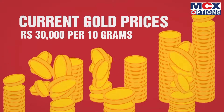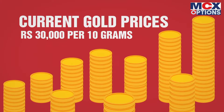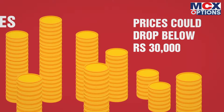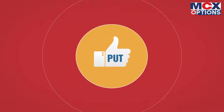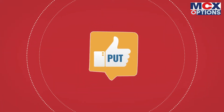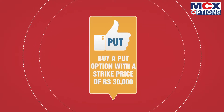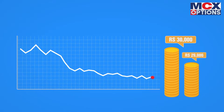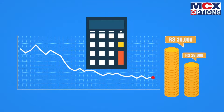Say current gold prices are at Rs.30,000 per 10g and prices could drop below Rs.30,000. Then just buy a put option with a strike price of Rs.30,000. Now, even if the prices drop, so would the gold futures prices — to say Rs.29,000.